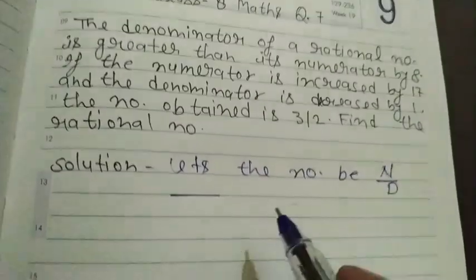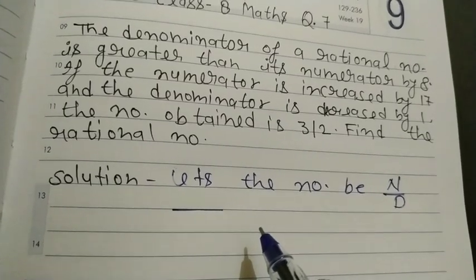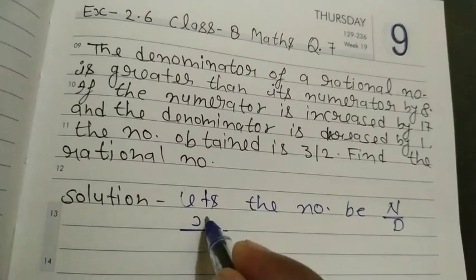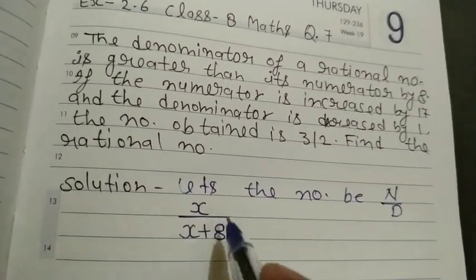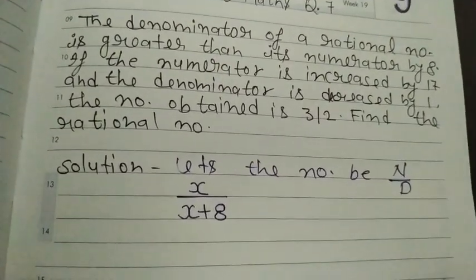In this question, given that the denominator of a rational number is greater than its numerator by 8, let the numerator be X and the denominator will be X plus 8. So this is our rational number. Now we further read the question.